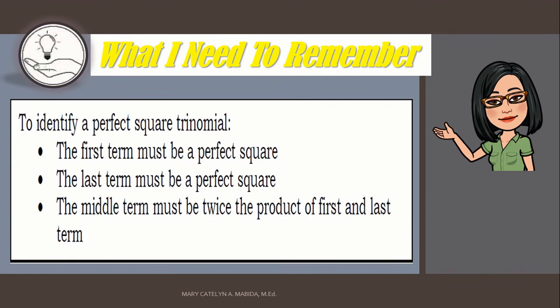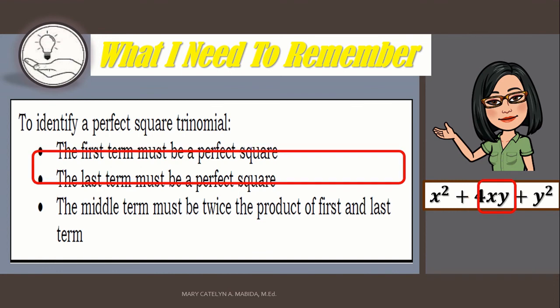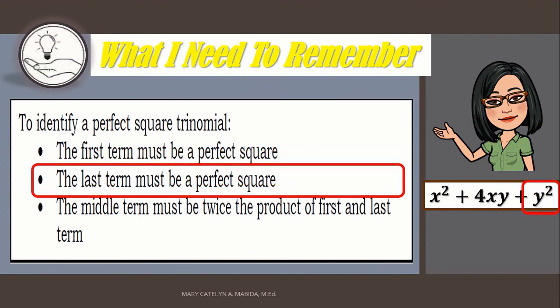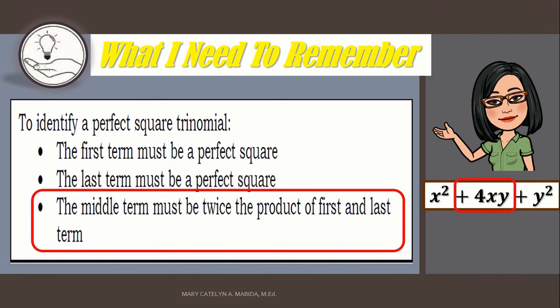Now, here is what you need to remember. To identify a perfect square trinomial, the first term must be a perfect square, the last term must also be a perfect square, and the middle term must be twice the product of your first and your last term. That's it! That's the end of Lesson 4.